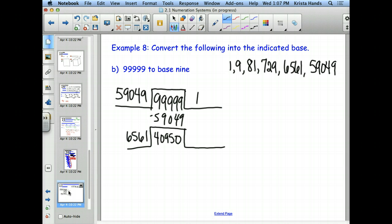Grab a calculator for me. That should go in quite a few times. Six times. And Taylor, what's six times the 6,561? 39,666. Excellent. So what happens, or what do we get when we subtract that?